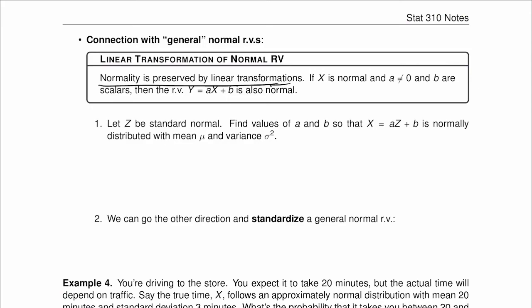That means if x is normal, and a is different than zero, and b are scalars, then the random variable y equal to a times x plus b is also normal.